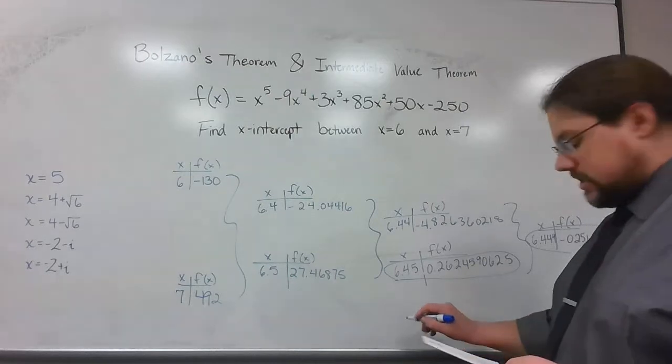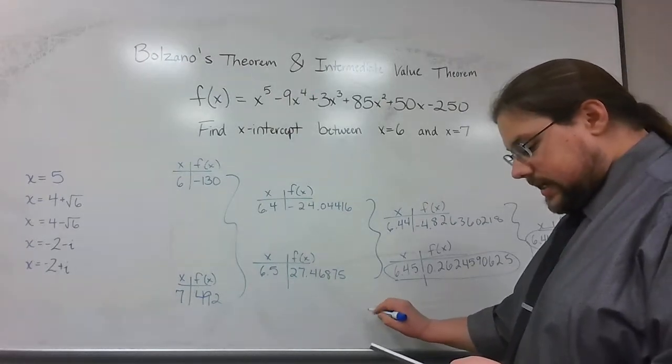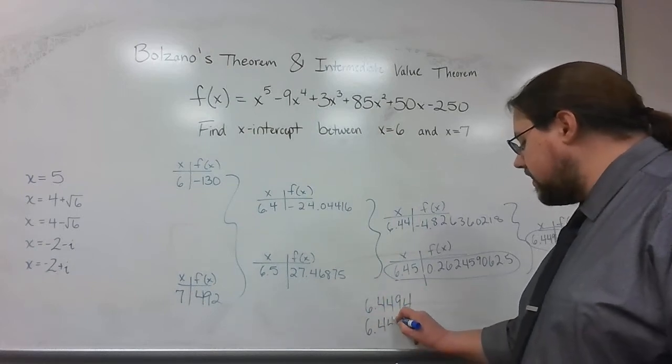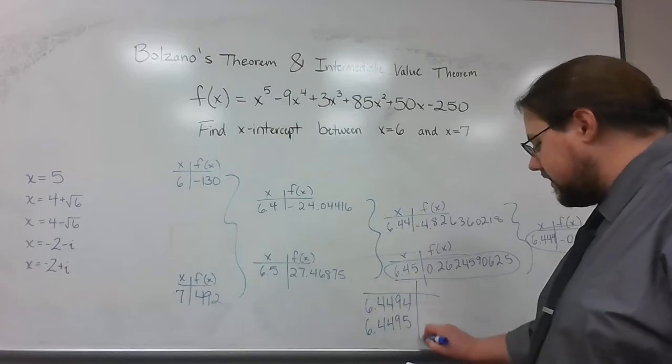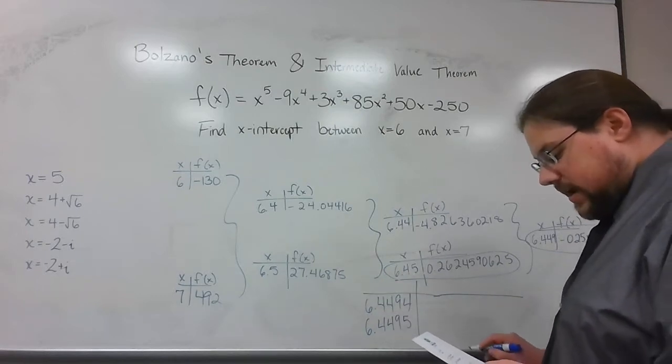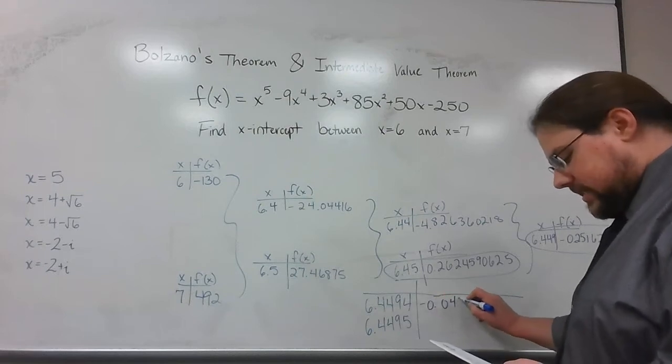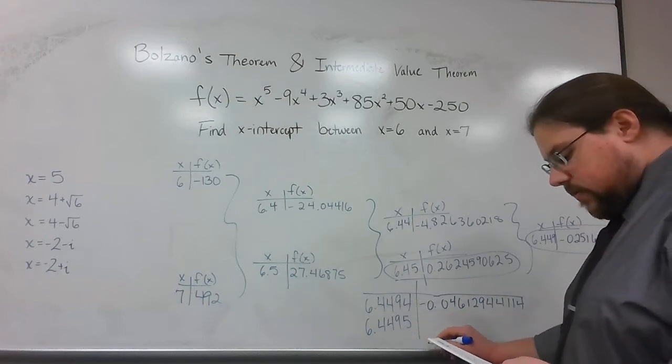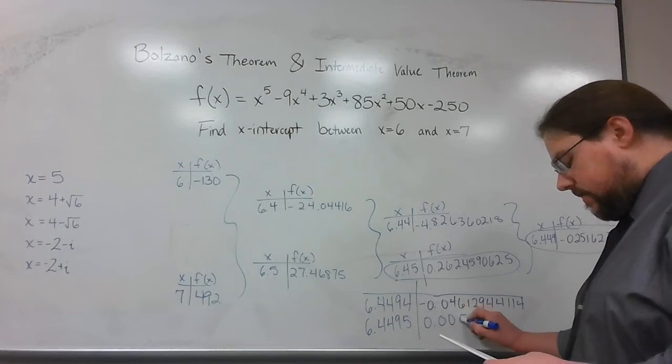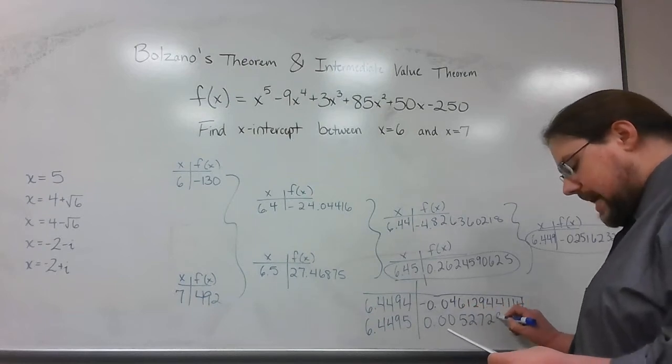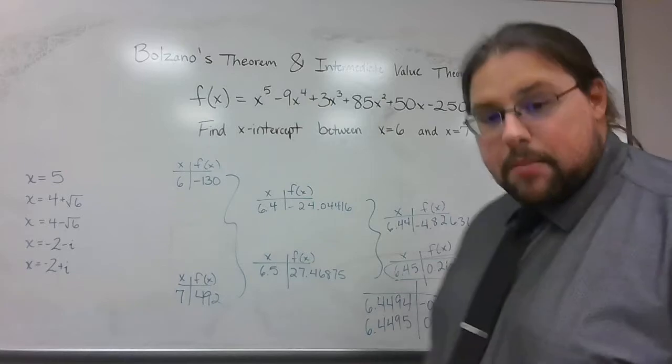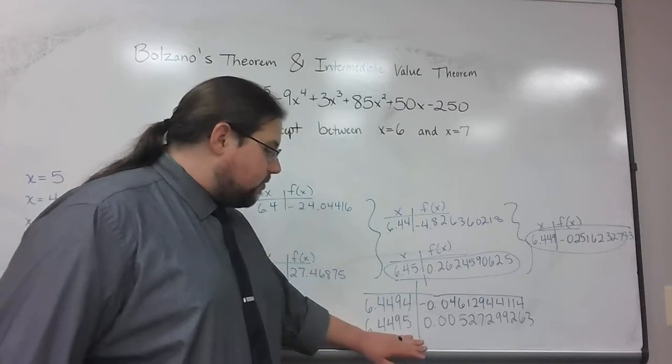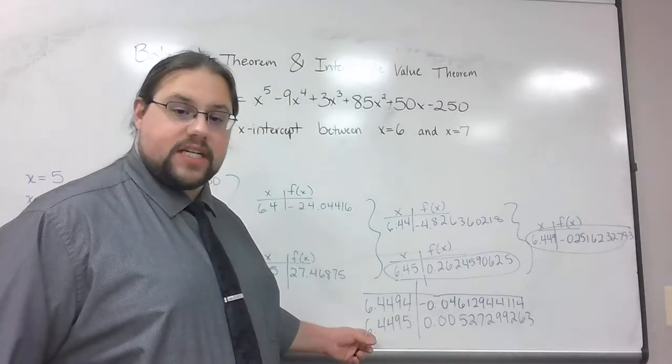I know I did it again just to make myself really get annoyed and just go as far as I can. I did 6.4494 and I did 6.4495. So I've got actually four decimal places here. When I did this, 6.4494 gave me negative 0.04612944114. When I plugged in 6.4495, I got 0.00527299263. So here I am, four decimal places deep and I've got 6.4494 and 6.4495. And that one seems to be closest to zero. So I would go with this 6.4495.